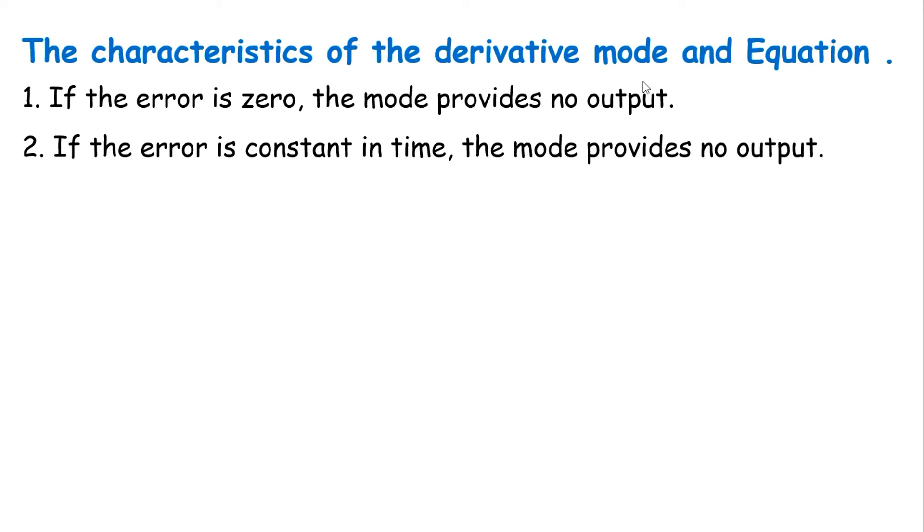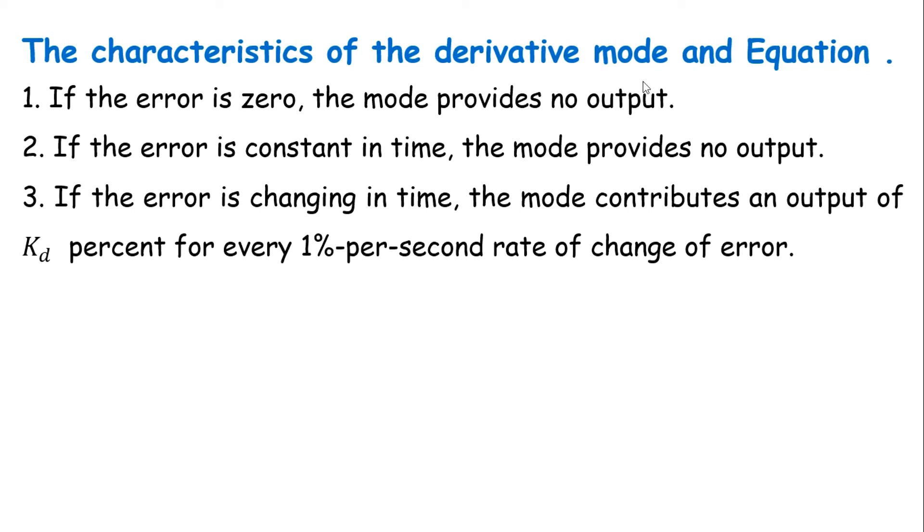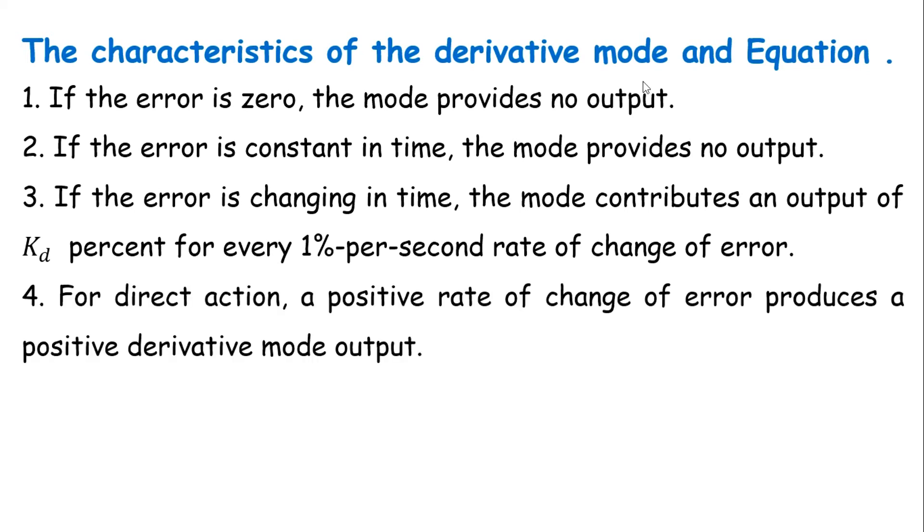If the error changes in time, the mode contributes an output of kd% for every % per second rate of change of error. Fourth characteristic is, for direct action, a positive rate of change of error produces a positive derivative mode output.